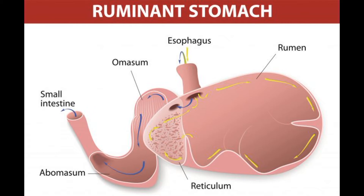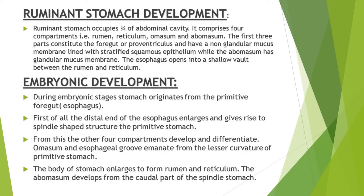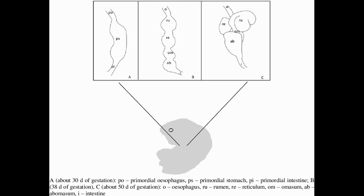Now let's discuss the embryonic development of the ruminant stomach. During embryonic stages the stomach of ruminants originates from the esophagus, which we call here the primitive gut. First, the distal end of the esophagus or primitive foregut enlarges and gives rise to a primitive stomach, which is a spindle-shaped structure. Then from this primitive stomach the other four compartments develop and differentiate.